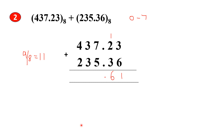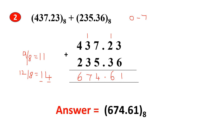Next, 7 plus 5 gives us 12. 12 is not an octal number, so divide by 8: quotient is 1 and remainder is 4. So 4 comes as the sum and 1 as the carry. Next, add 1 plus 3 plus 3 plus 3, which is 7 — an octal number. Then 4 plus 2 is 6, also an octal number. So the final answer is 674.61.